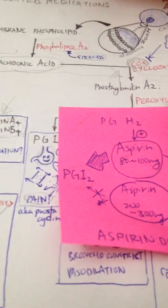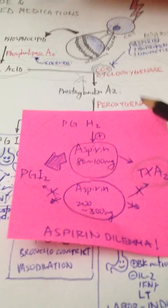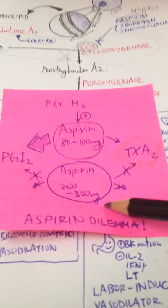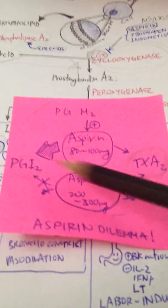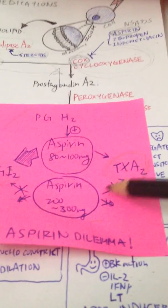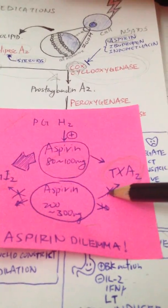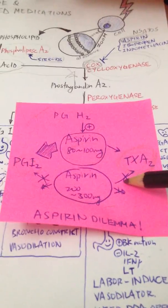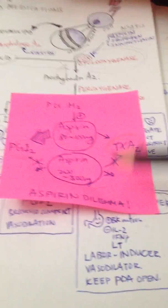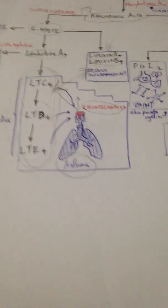However, in high dose, 200 to 300 milligrams, it will block both of these pathways, thereby it will reduce the efficacy at controlling the platelet aggregation. Very interesting. This is called aspirin dilemma. In the case of platelet control, we like to use low dose aspirin.